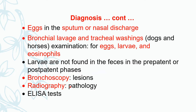Bronchoscopy helps in the diagnosis of various lesions present in the trachea and bronchi. Radiographic examination allows checking of pathology in the lower respiratory tract. Serological tests, including ELISA, are also useful for confirmation of the diagnosis.